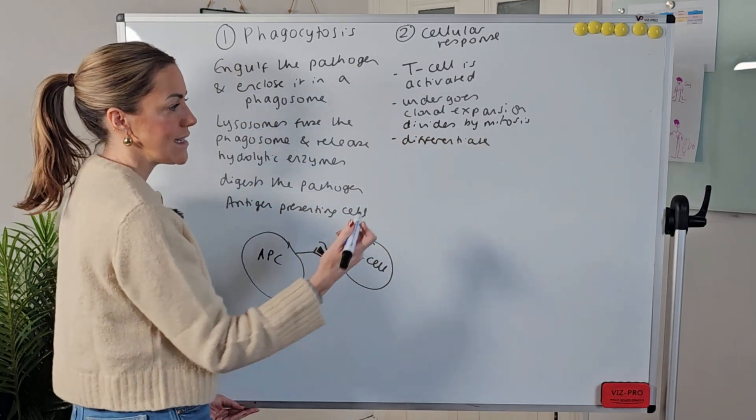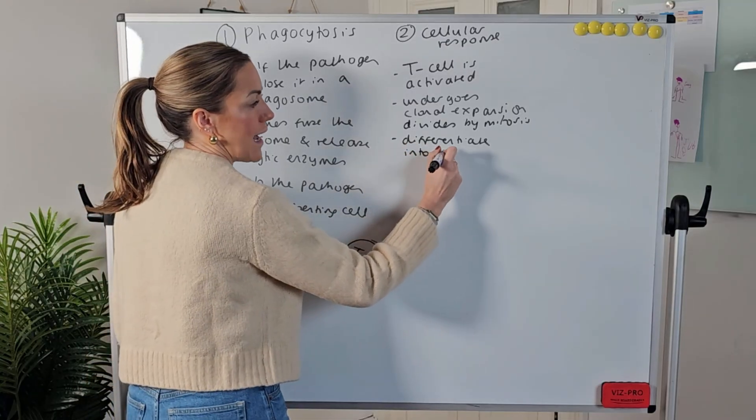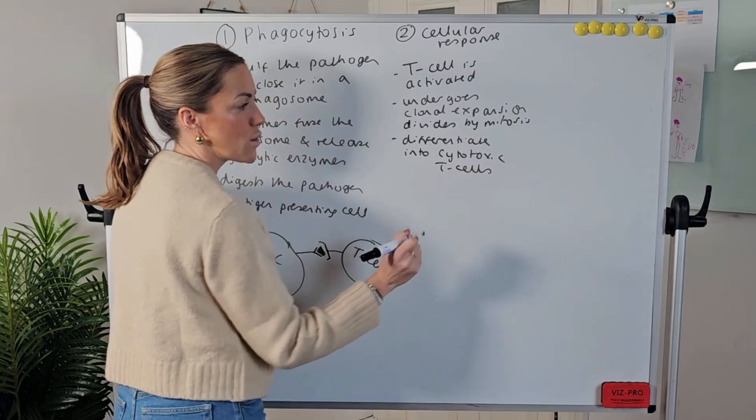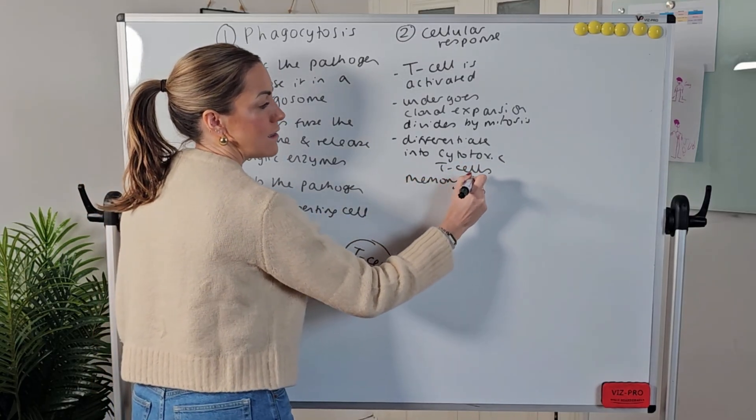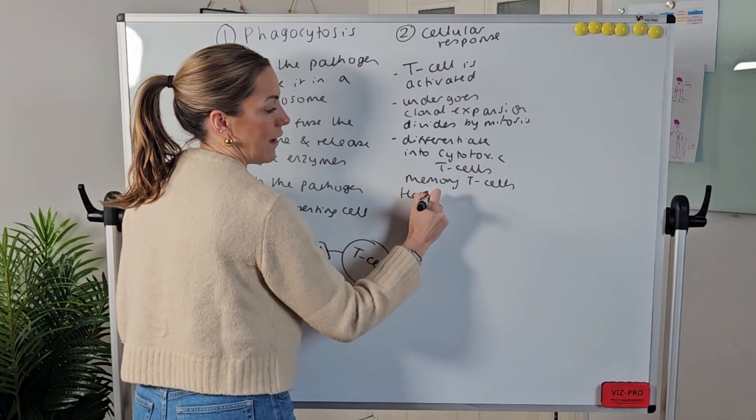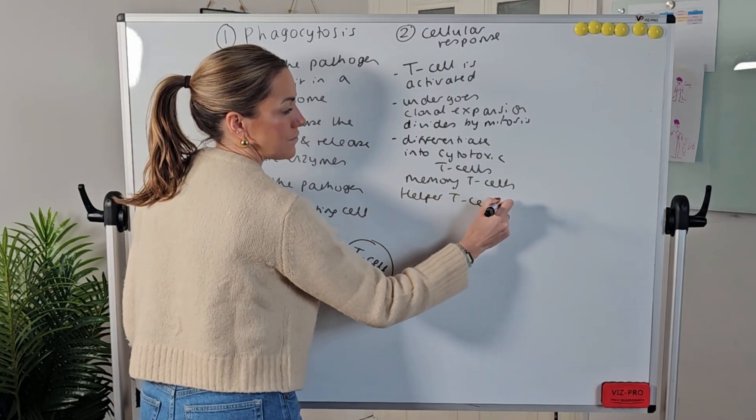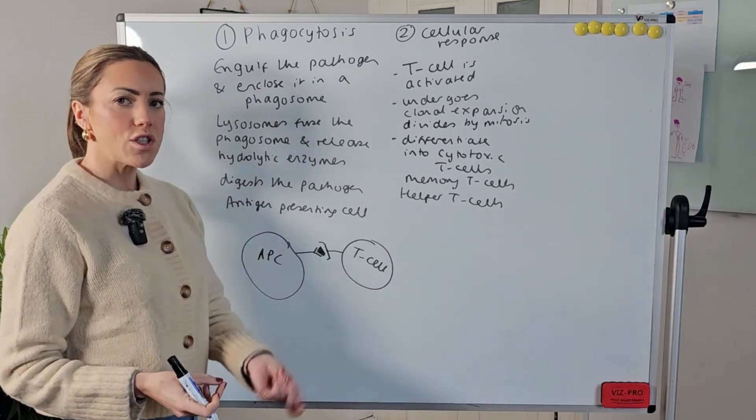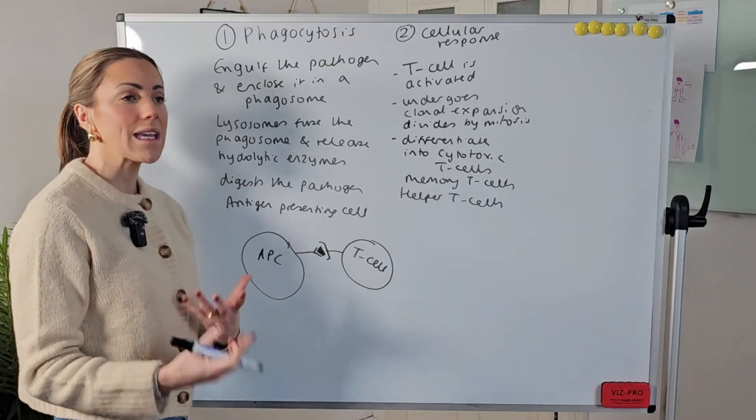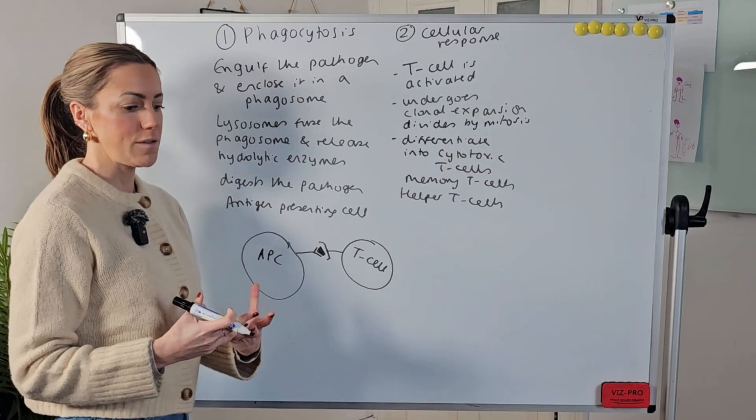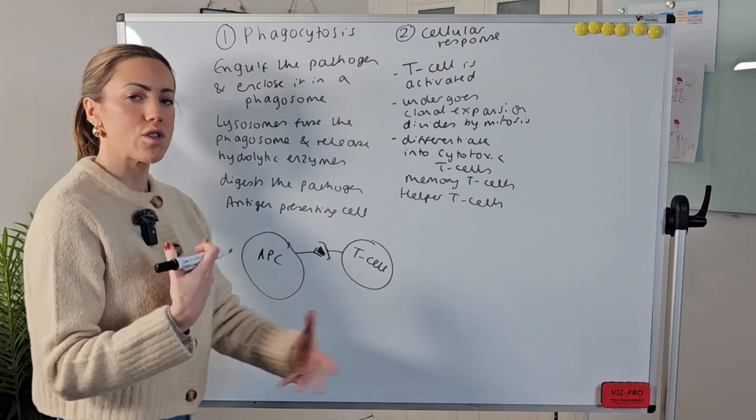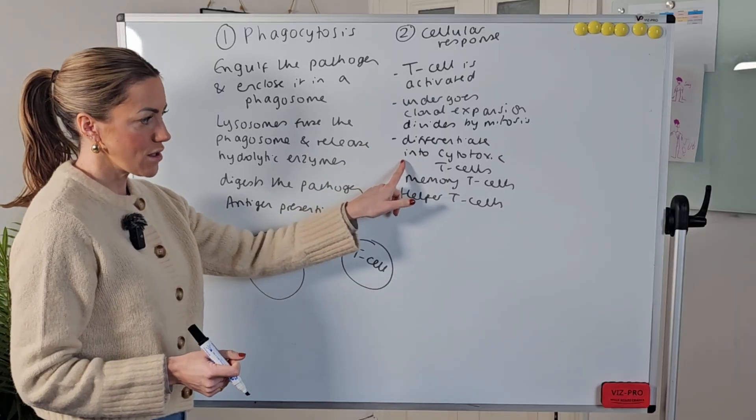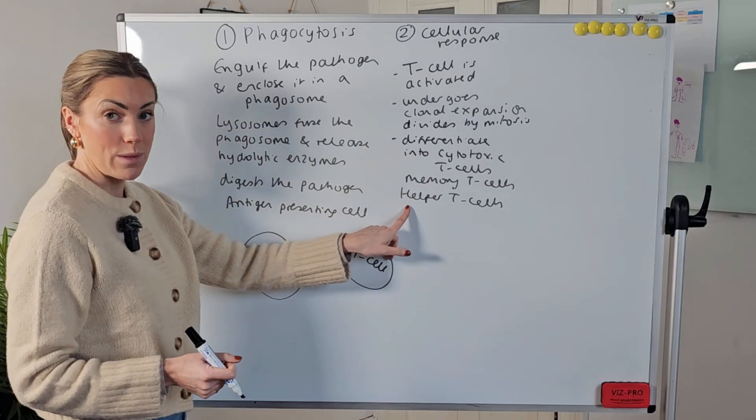Those cloned T cells are then going to differentiate or specialize into cytotoxic T cells or killer T cells as we can call them, memory T cells, and helper T cells. There's also another type called the regulatory T cell but if you're doing AQA you don't need to know about that one but the regulatory T cell is basically involved in stopping the immune response once the pathogen has been destroyed.